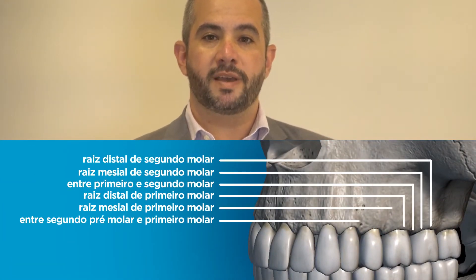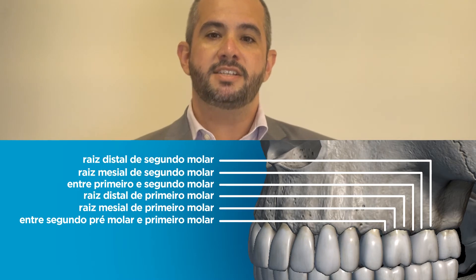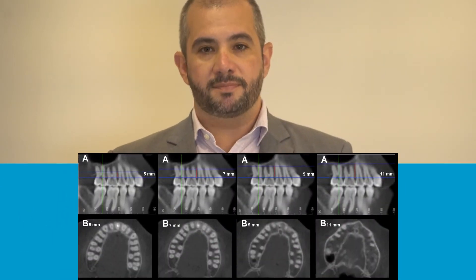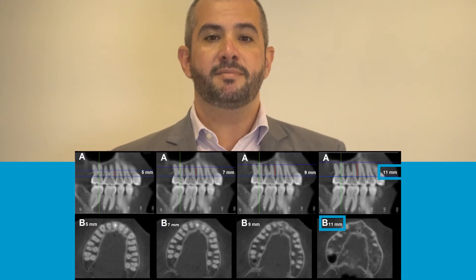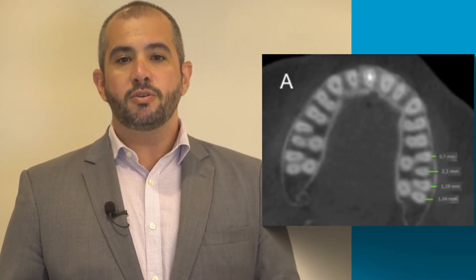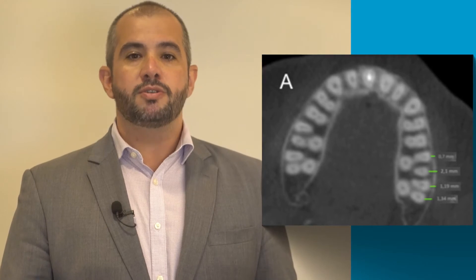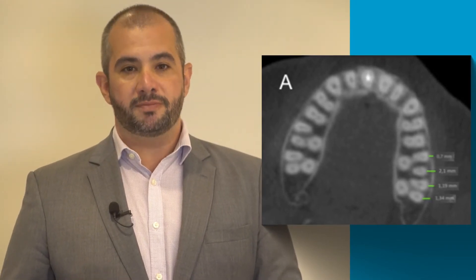The buccal alveolar bone thickness was measured in six zones between the second premolar and the distal root of the second molar, at 5, 7, 9, and 11 mm apical to the alveolar crest. In an axial slice, the thickness was measured at each of these distances from the most vestibular point of the root to the most vestibular point of the adjacent alveolar cortical bone.